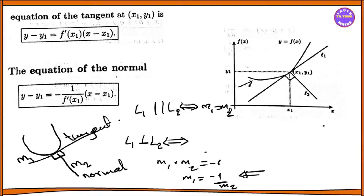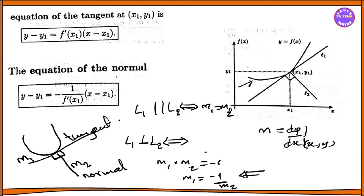Now we have to say that slope d is the same. The definition is the same, so n is equal to m. If we use m, then t is equal to m. So if you want m, n is equal to dy by dx. So m is equal to dy by dx. Because they are the same, m is equal to df(x)/dx.